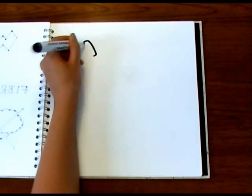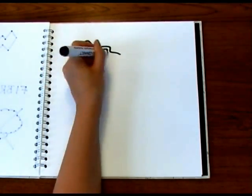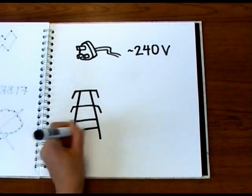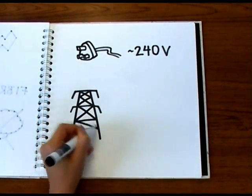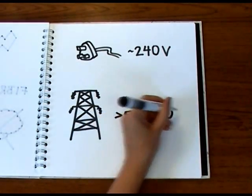At mains voltage of 240 volts, it takes a current of just 60 thousandths of an amp for this to happen. A high voltage power line, some of them carrying electricity at over half a million volts, would cause an even higher current to flow through your body, more than enough to kill you.